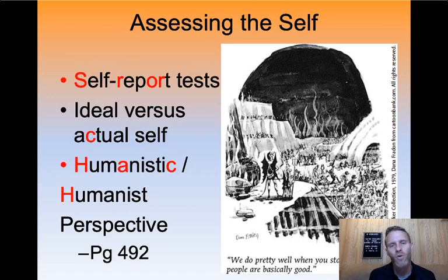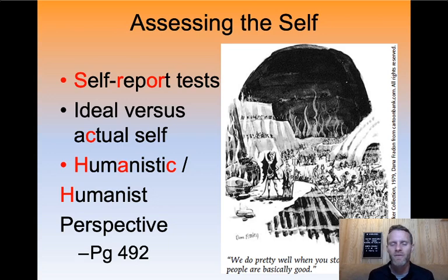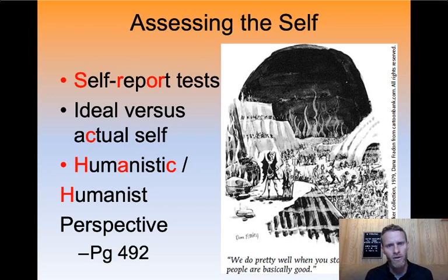That relies on you answering accurately. Most of the time that's okay, but sometimes we answer according to our ideal self versus our actual self. Ideally, do I want to get all my assignments in early and on time? Yes. But the truth is my actual self maybe does procrastinate a little bit. When you start answering questions according to your ideal self and not your actual self, it obviously throws off the results of any of those trait perspective self-inventories. The humanistic perspective has a little bit of that argument against it for the same reason: ideal self versus actual self.